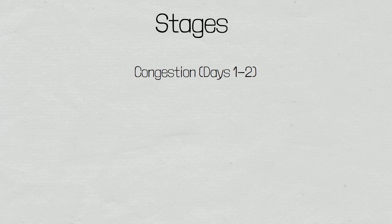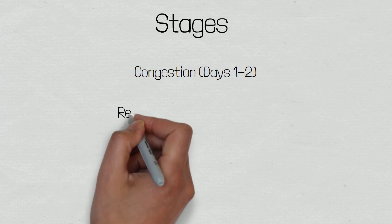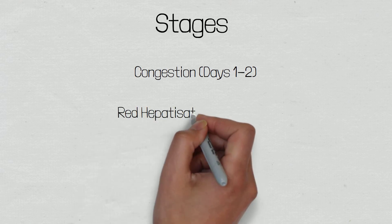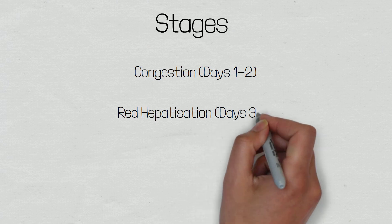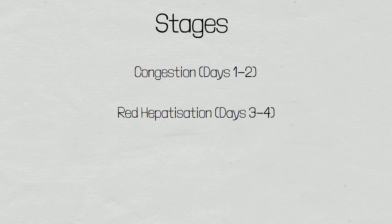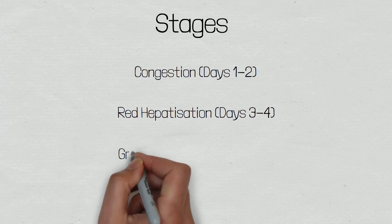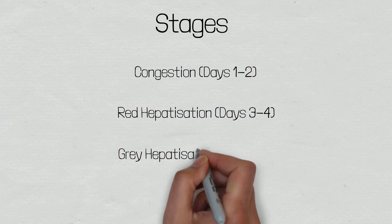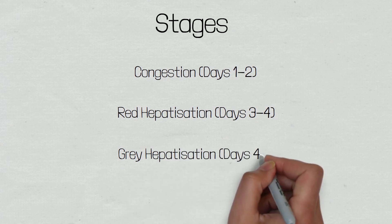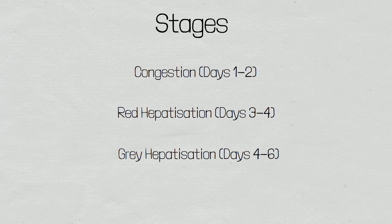The second stage occurs around days 3 to 4 and is known as red hepatisation or consolidation. This is when the area becomes consolidated with red blood cells, white blood cells and fibrin. Around days 4 to 6, the third stage occurs and is known as grey hepatisation — when the red blood cells are slowly destroyed and the tissue takes on a grey appearance.